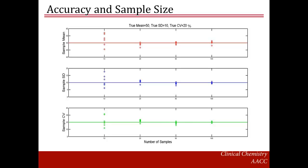Looking at the second and third panels, which estimate the SD and CV respectively, you can see that the higher the sample size, the more precise the estimates. A small sample size has a lot of variation in the estimates — estimates from a sample size of 10 are more spread out compared to the other sample sizes. The estimates from sample size 100 have less spread and are closer to the true value. The bigger the sample size, the closer the estimates to the true values.